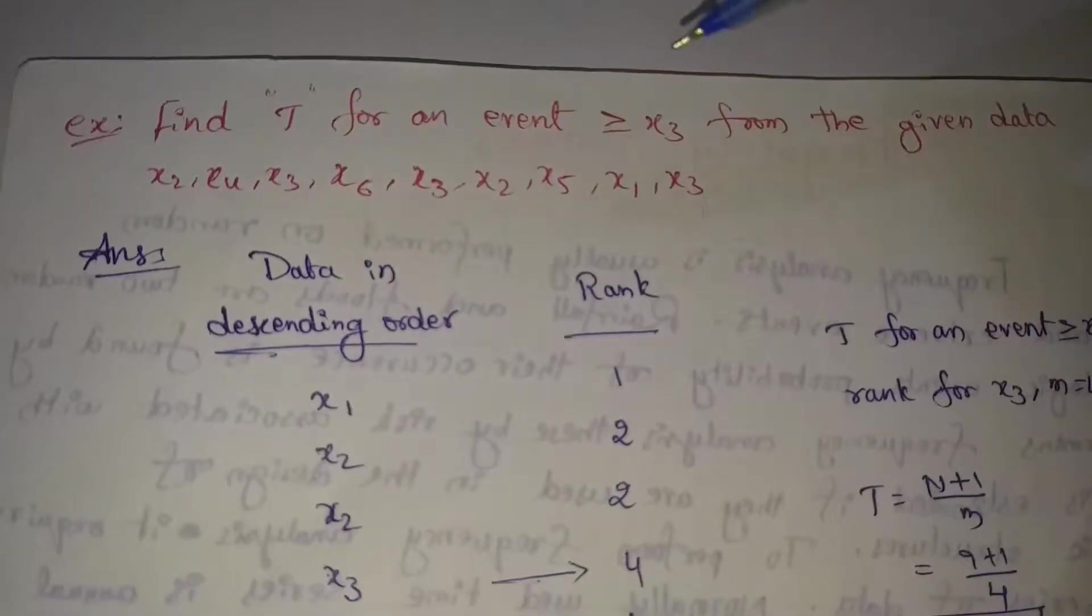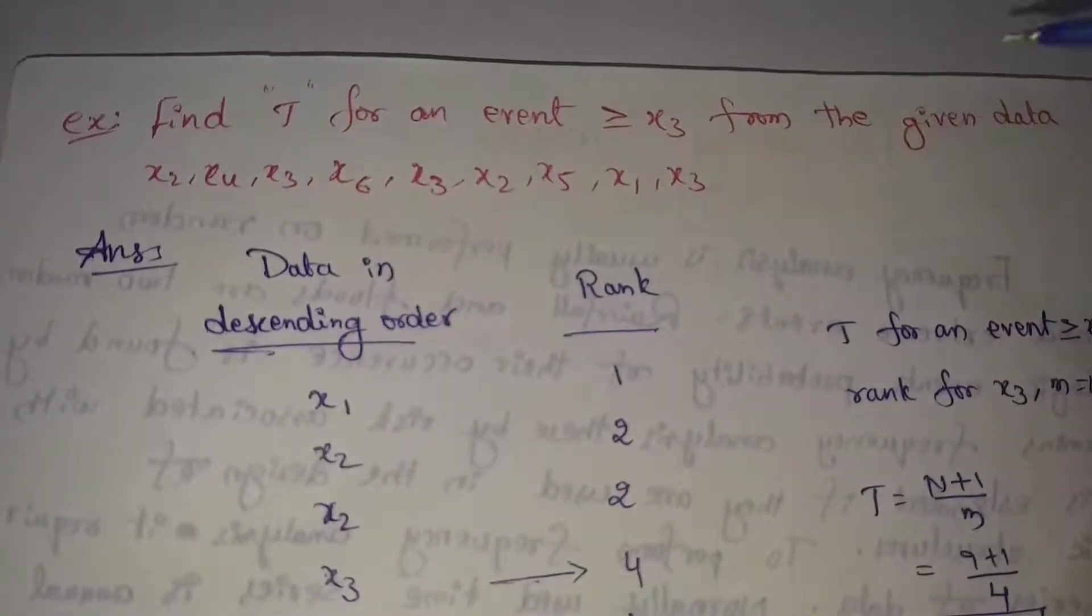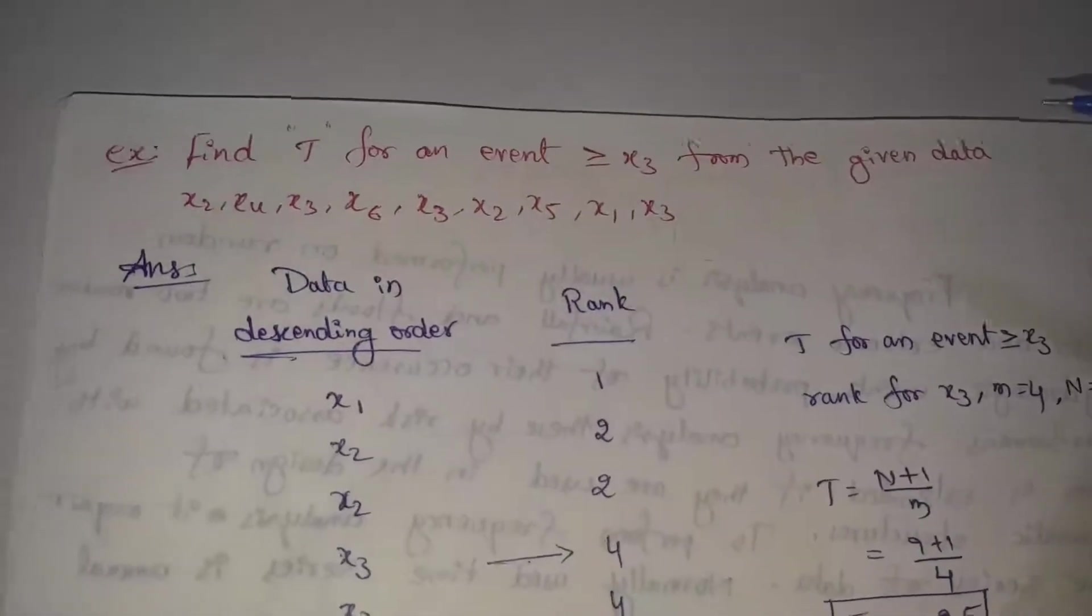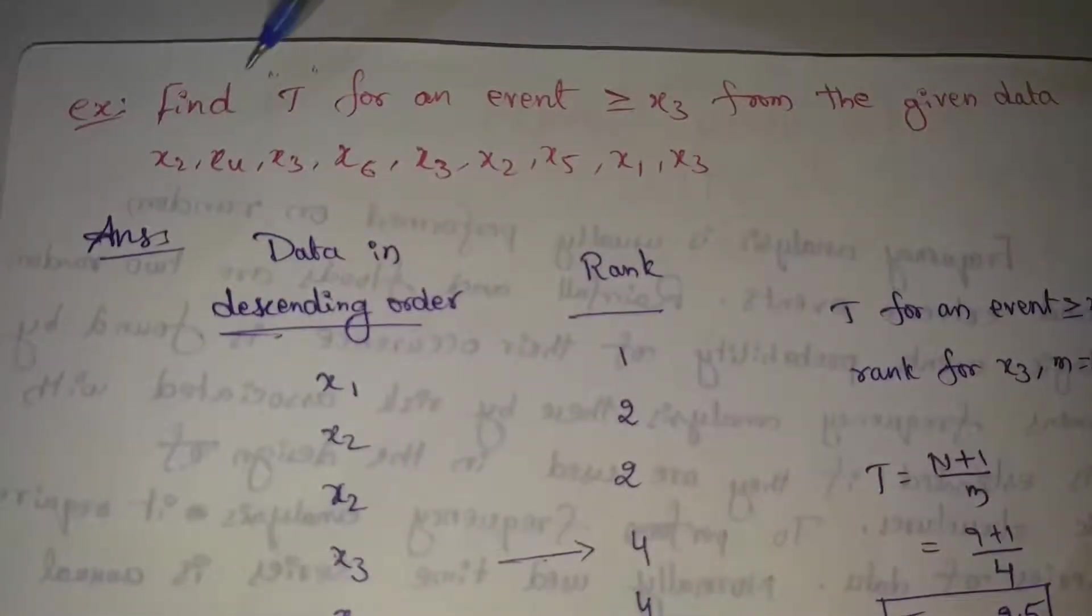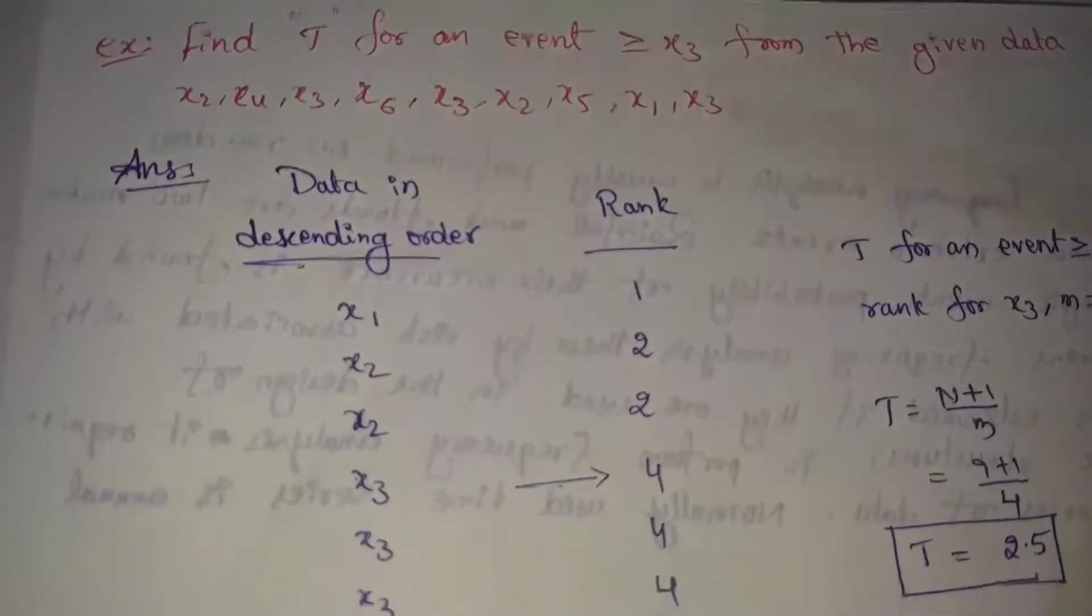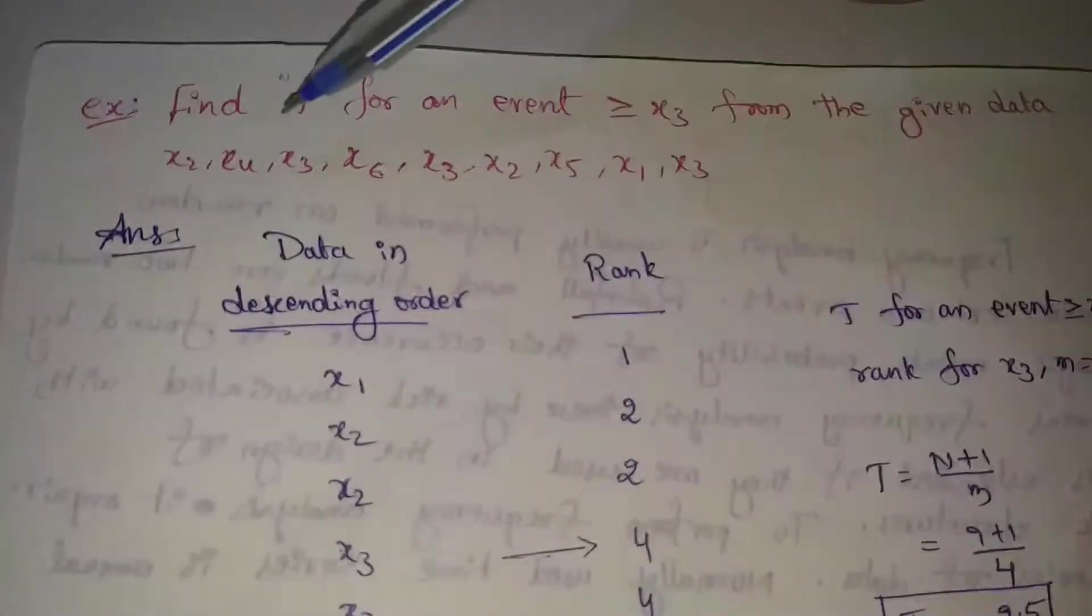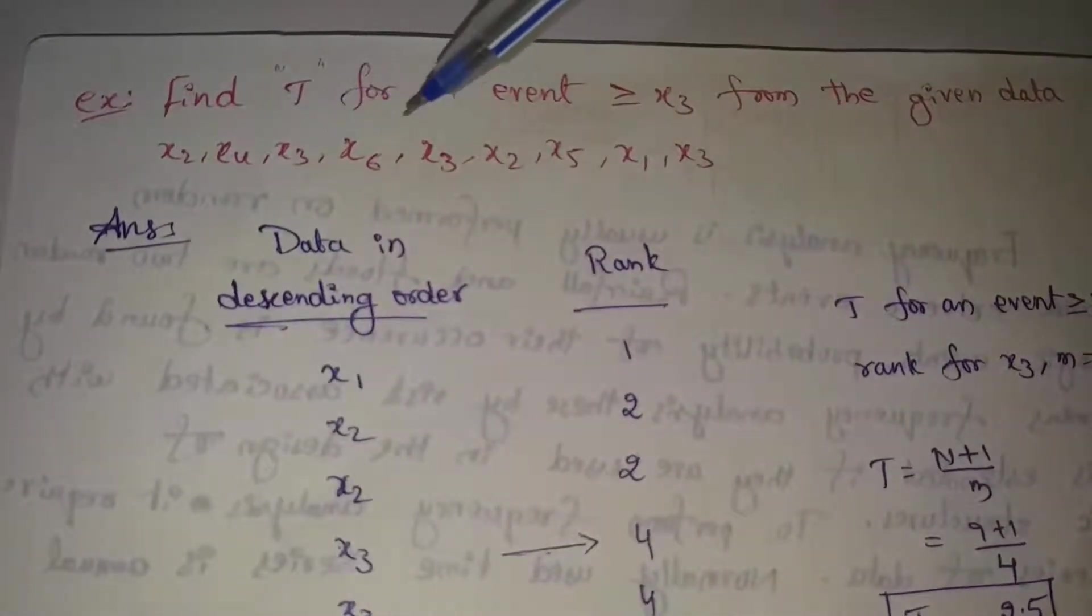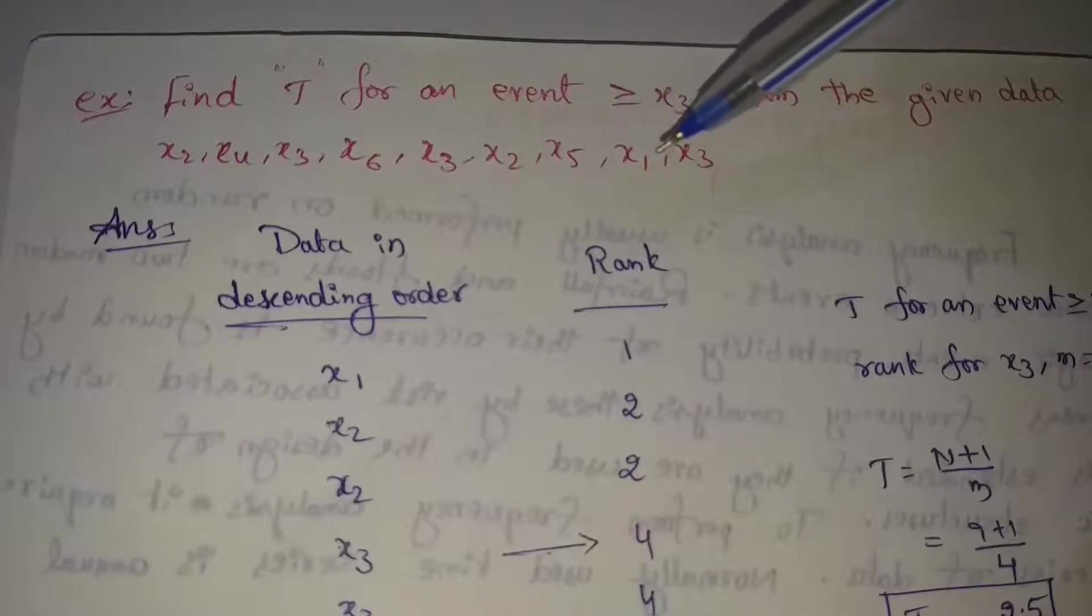Find T for an event greater than or equal to x3 from the given data. The data contains precipitation values: x2, x4, x3, x6, x3, x2, x5, x1, x3.